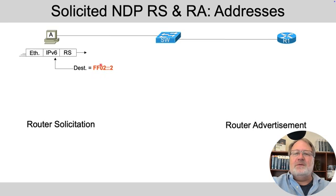Now let's talk about duplicate address detection. Hosts, routers — anything using IPv6 uses it. When an interface first comes up with a unicast address, be it global unicast or link local, it tests to make sure no other device on the link is using that address. When an interface comes up, that device sends a neighbor solicitation for itself. If the address is unique, no one should reply — wait a bit, no reply, and you're unique, go ahead. But if a neighbor advertisement comes back, it means someone is using the same address and replied, indicating a duplicate address, so the sender doesn't use that address until the conflict is resolved.